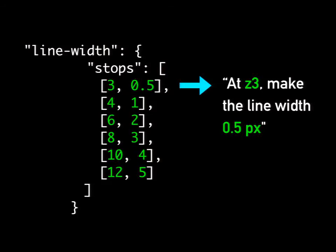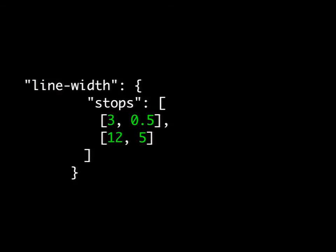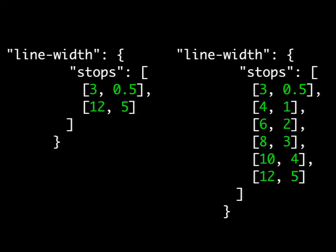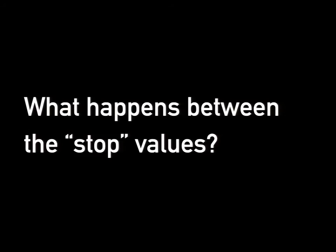The really cool thing about functions is that a much simpler version — just the first and last stops — is visually exactly equivalent to the longer one. How are they the same? It's all about what happens between these stop values. In Carto CSS, you just jump from one value to the other — there's nothing to transition between. But in GL, the function interpolates values between stops.